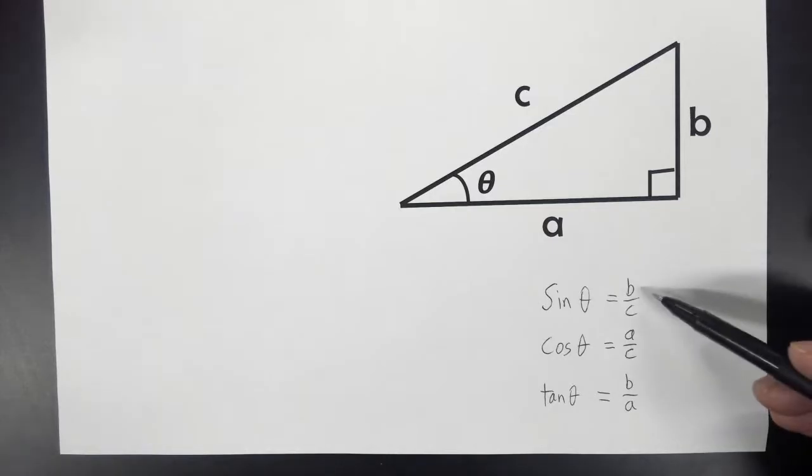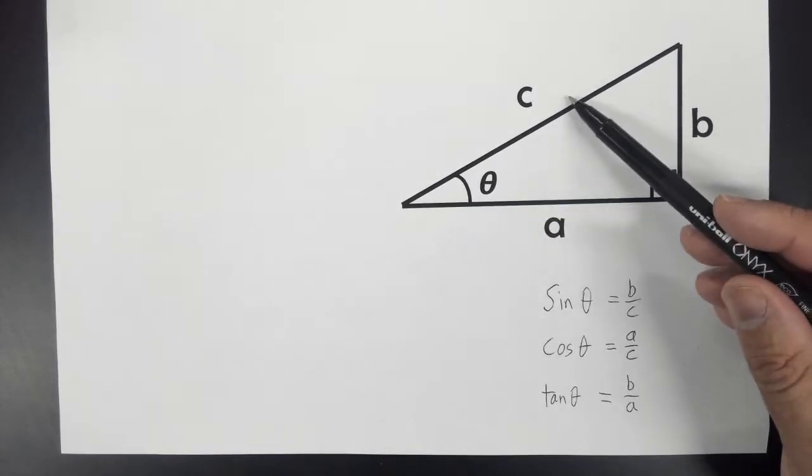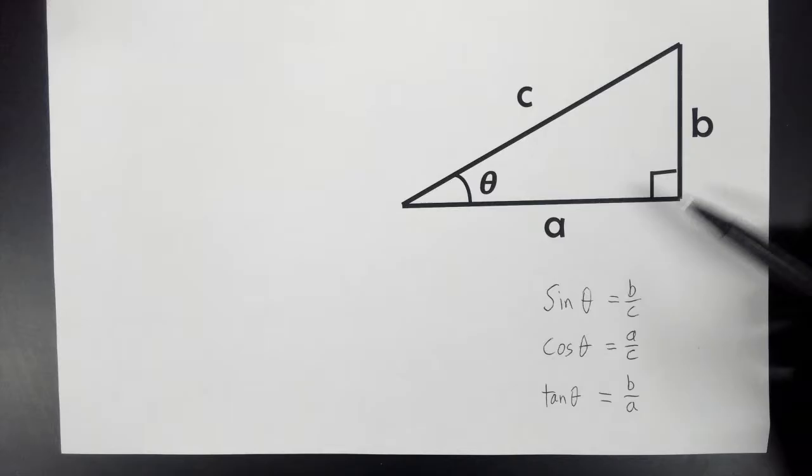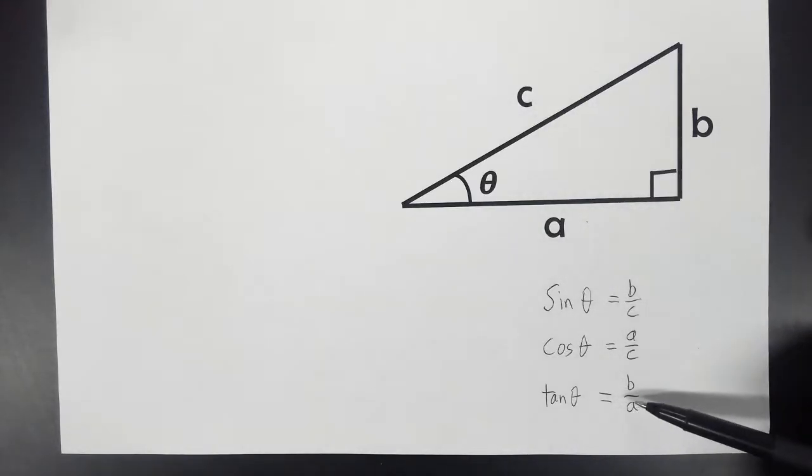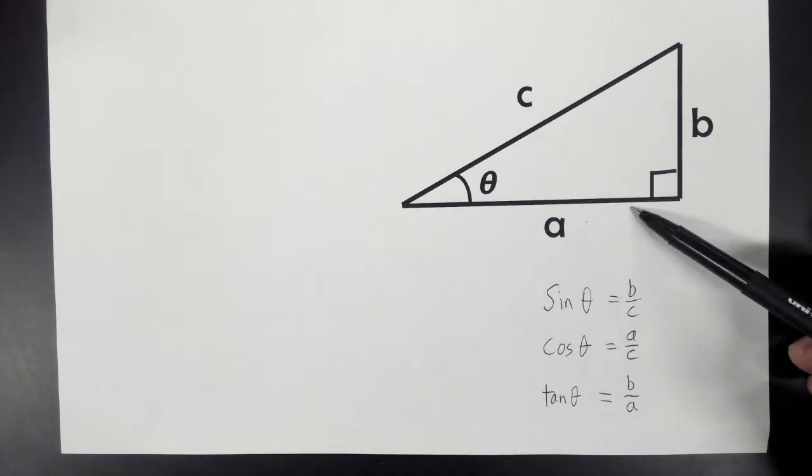Now, sine is just the length of B divided by the length of C. Cosine is the length of A divided by the length of C. And tangent is the length of B divided by the length of A.